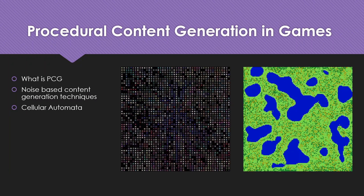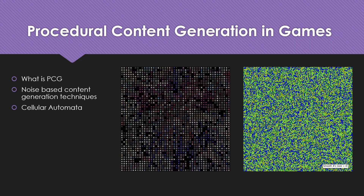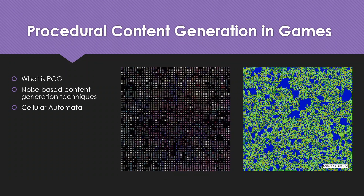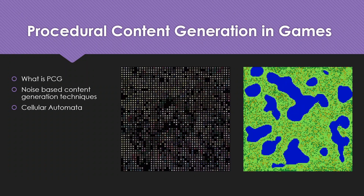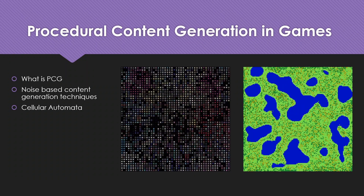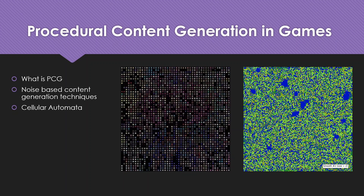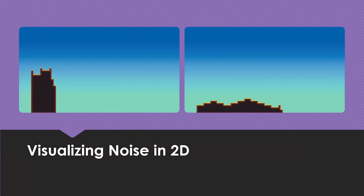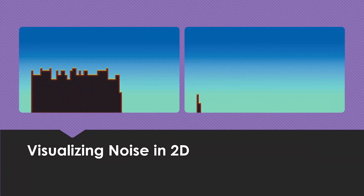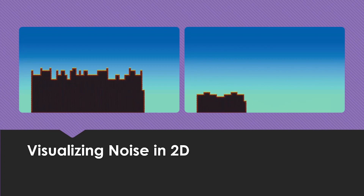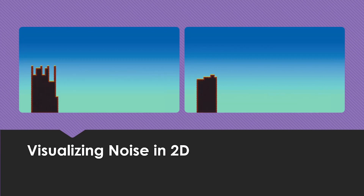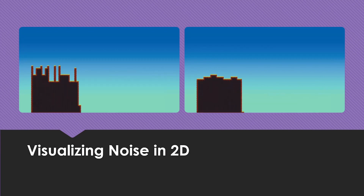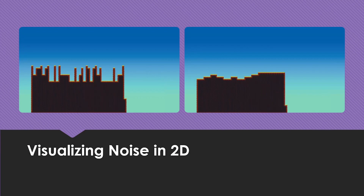The image on the left is a visualization of noise in two dimensions. The image on the right highlights how a few passes of cellular automata and smoothing can use noise to create a map. Another visualization showcases raw noise on the left and noise with smoothing applied on the right. Notice how simple smoothing algorithms can give results that almost seem like a 2D platformer game level.